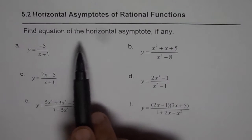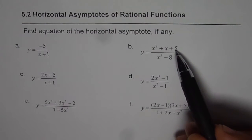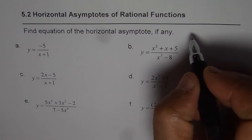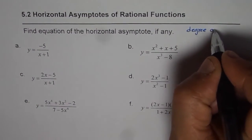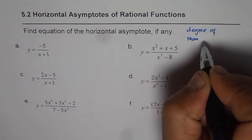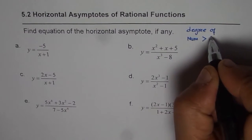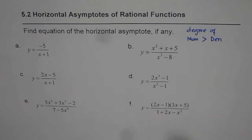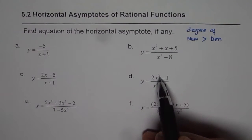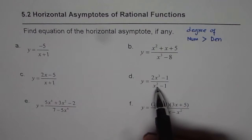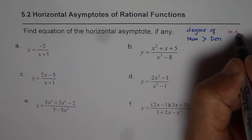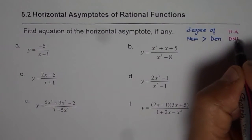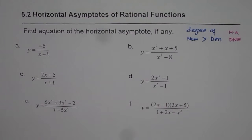To find the equation of a horizontal asymptote we need to check the degree of the numerator and that of the denominator. If the degree of the numerator is greater than the degree of the denominator — as in this case where the degree of the numerator is 3 and the degree of the denominator is 2 — then the horizontal asymptote does not exist. That is Case 1.